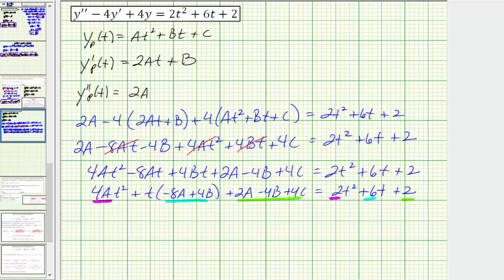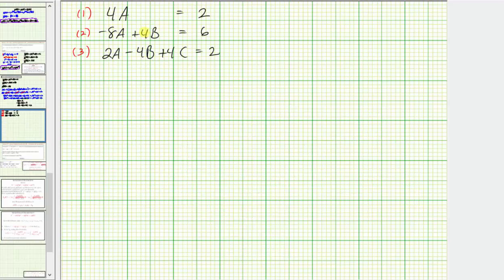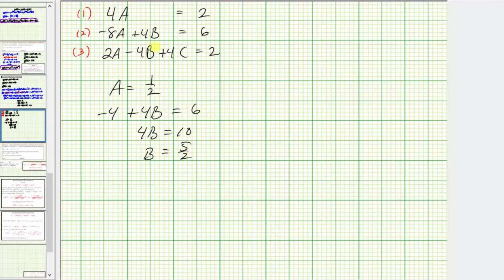Writing out these equations: 4A = 2; -8A + 4B = 6; and 2A - 4B + 4C = 2. From equation one, dividing both sides by four, we know A = 1/2. For equation two, substituting 1/2 for A: -8(1/2) = -4, so -4 + 4B = 6. Adding four to both sides gives 4B = 10, and dividing by four gives B = 10/4 = 5/2. So now we know A = 1/2 and B = 5/2, and we can find C using equation three.